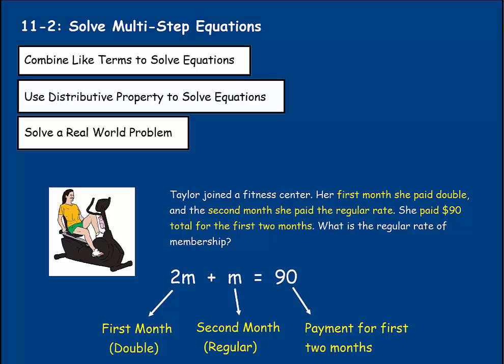We're on lesson 2 of chapter 11, where we're going to solve multi-step equations. First we're going to combine like terms to solve equations. Then we're going to use the distributive property to solve equations. Then we'll solve a real-world problem.